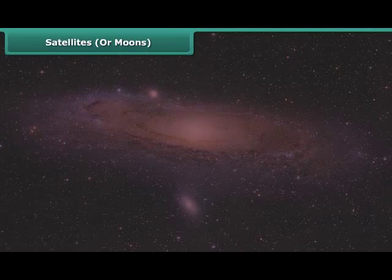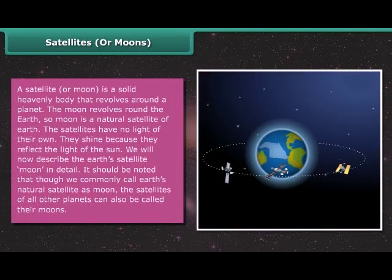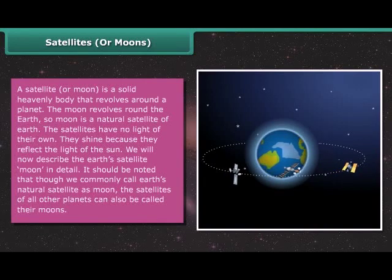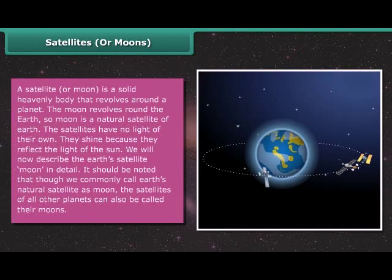A satellite or moon is a solid heavenly body that revolves around a planet. The moon revolves around the Earth, so moon is a natural satellite of Earth. The satellites have no light of their own. They shine because they reflect the light of the Sun. Though we commonly call Earth's natural satellite as moon, the satellites of all other planets can also be called their moons.